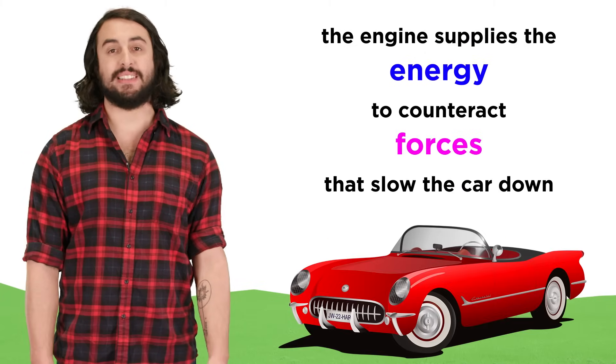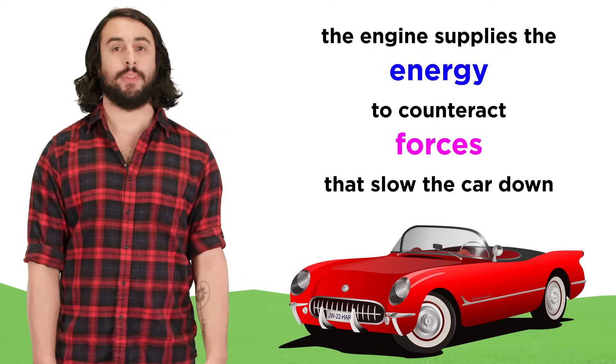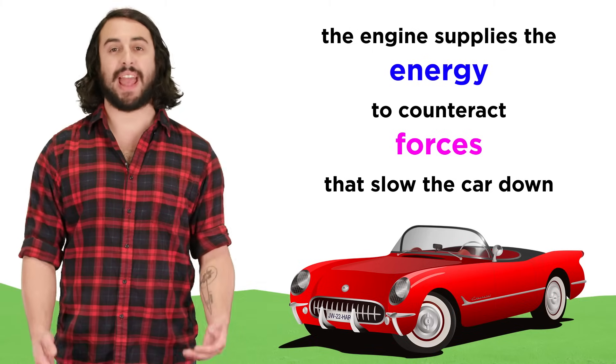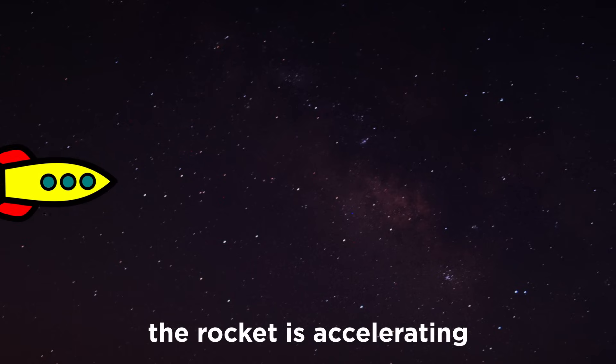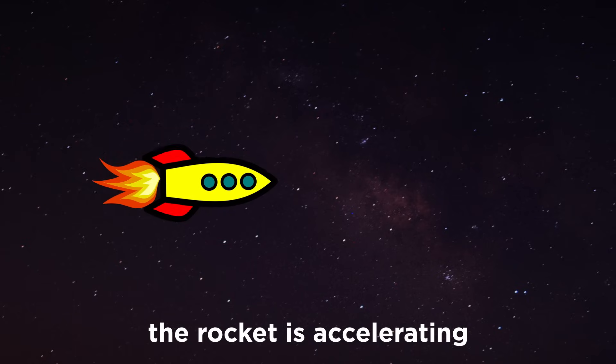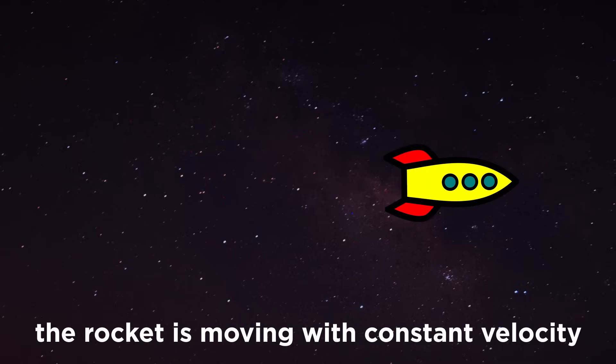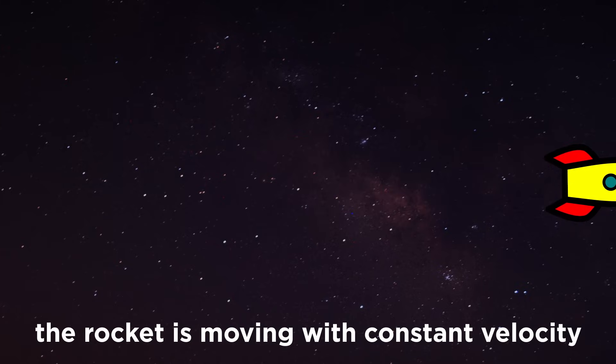This is why a car needs an engine that is always running, because there is resistance from the atmosphere and friction with the road. But a spaceship can just accelerate to a certain velocity and then turn the engine off, and it will cruise at that final velocity without end.